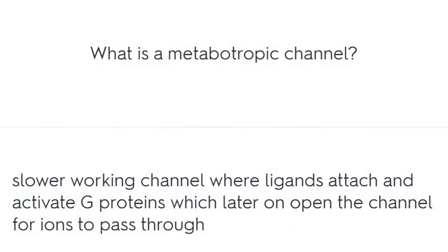What is a metabotropic channel? A slower-working channel where ligands attach and activate G proteins, which later open the channel for ions to pass through.